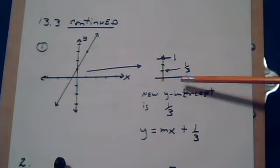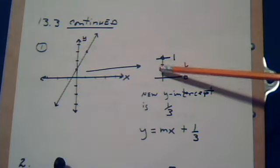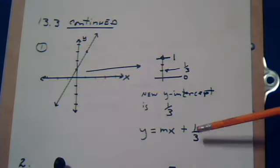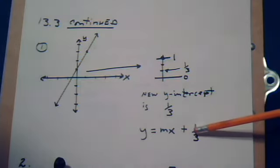New y-intercept is 1/3. So this is the y-intercept of the line that we're forming. So we put it where the B is.